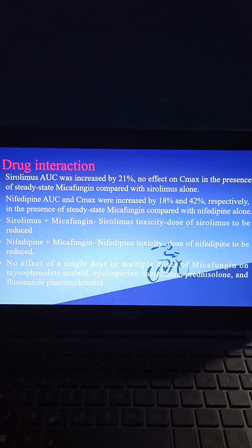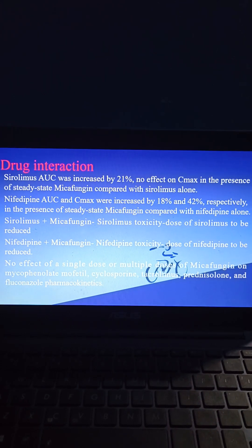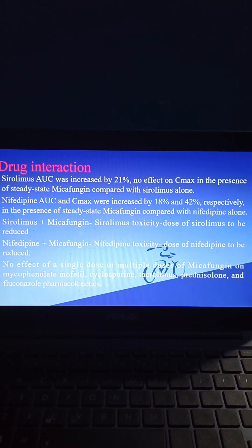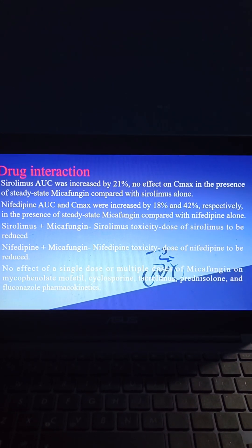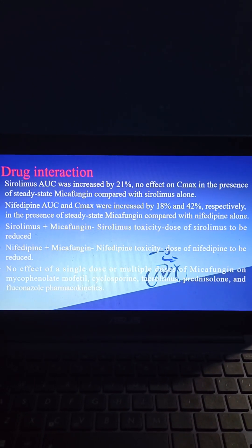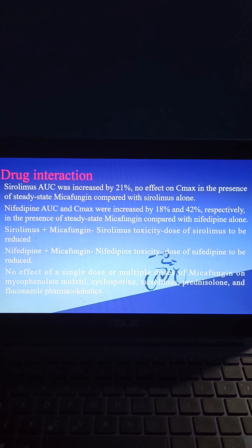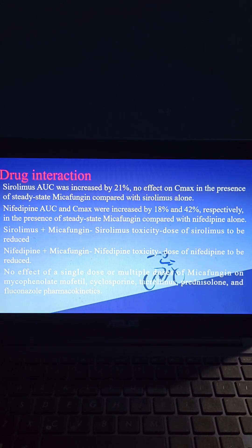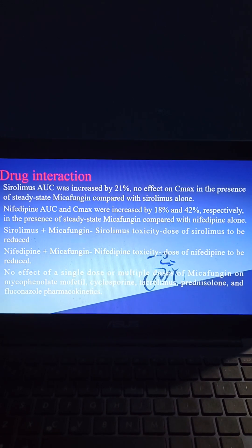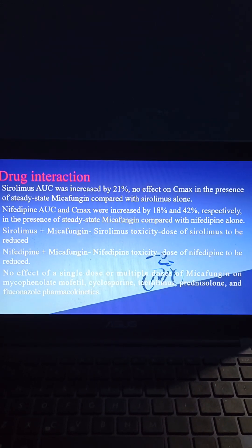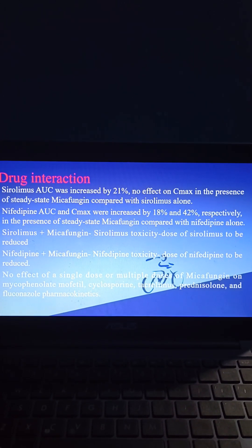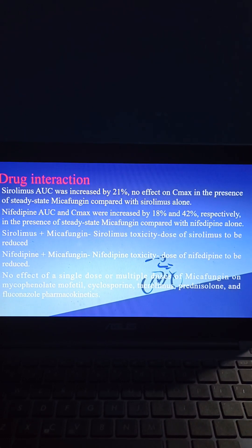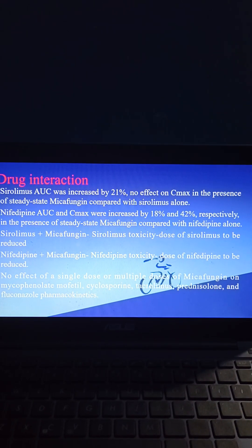Coming to drug interactions: sirolimus area under the curve was increased by 21% with no effect on C-max in the presence of steady-state micafungin compared with sirolimus alone. Sirolimus AUC and C-max were increased by 18% and 42% respectively. Sirolimus plus micafungin can lead to sirolimus toxicity, so the dose of sirolimus should be reduced.